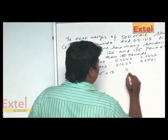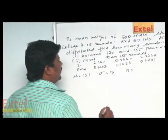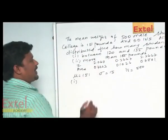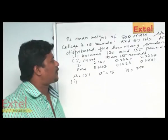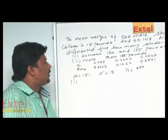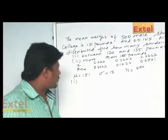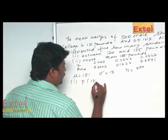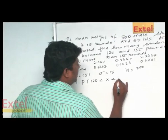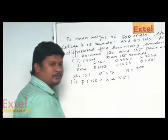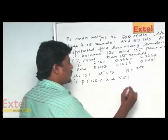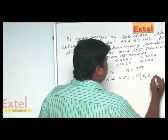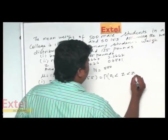The total number of students is equal to 500. For the first question, let x be the random variable denoting the weights of students. We have to find the probability of x between 120 and 155 pounds, that is P(120 < x < 155). Now I am going to find out the z values: z1 and z2, that is P(z1 < z < z2).